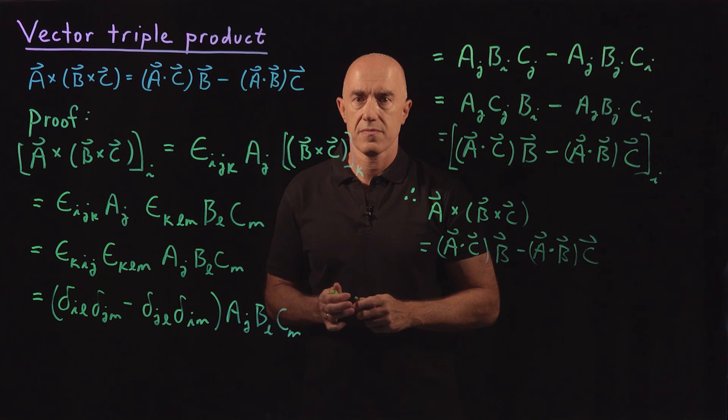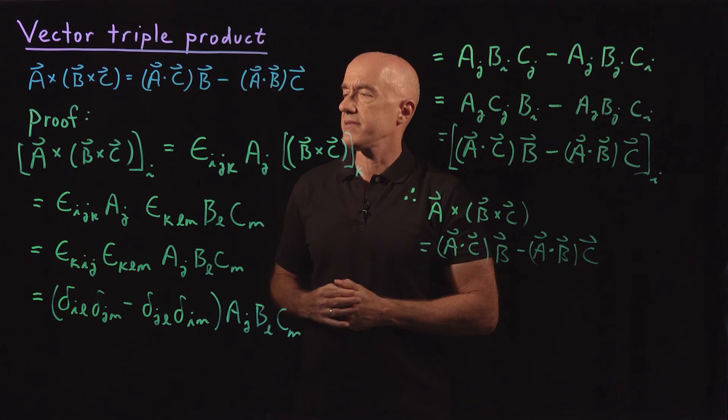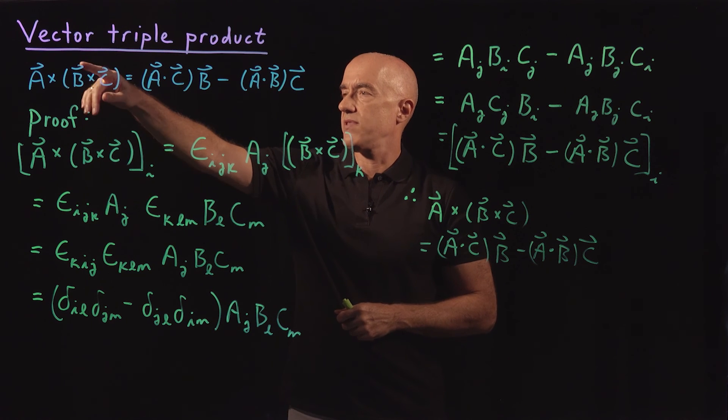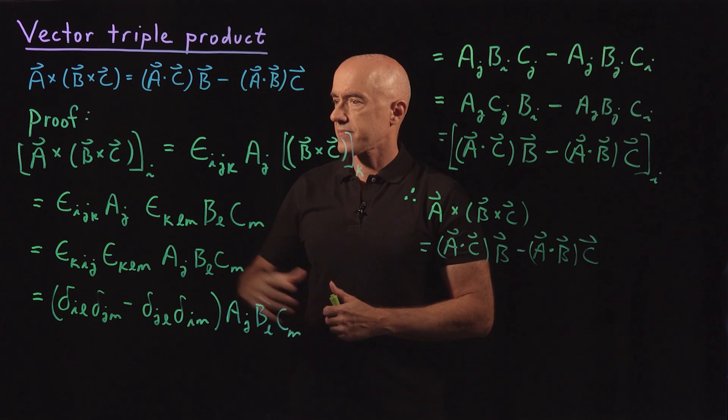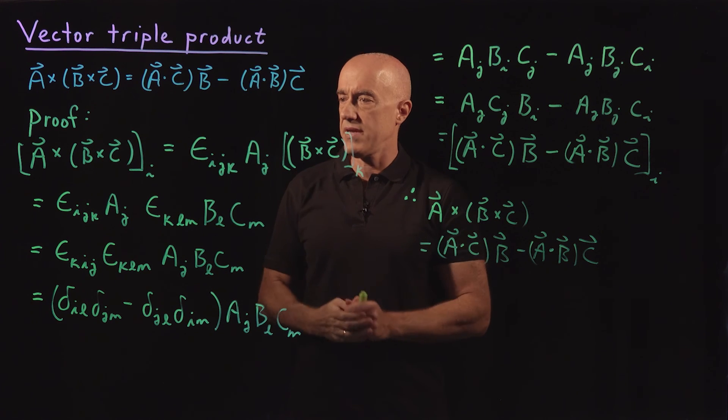That's the proof. Okay, so let me summarize. To prove the vector triple product identity, we prove it for the i-th component.